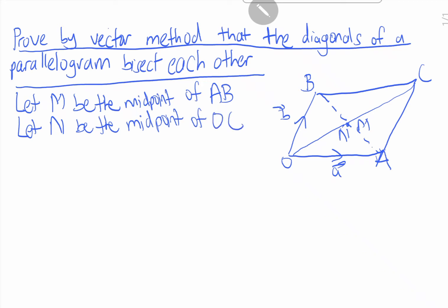So why do we do this? So that we will see whether the position vector of OM is equal to ON. If they are equal, this means that they bisect each other. Now let's get started.